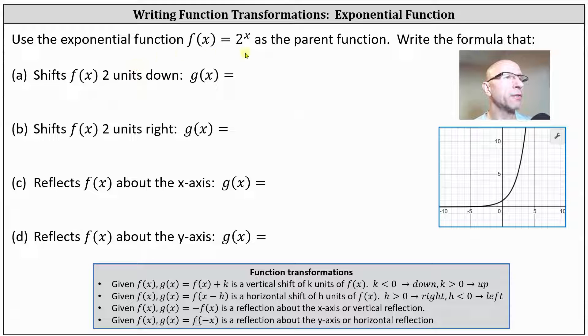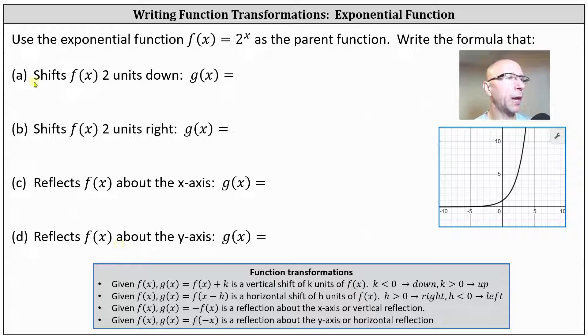We're told to use the exponential function f of x equals two to the power of x as the parent function, and write the formula that gives the following transformations. Part A: shift f of x two units down.